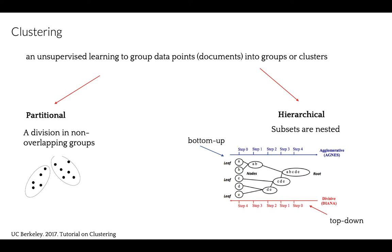It works in a bottom-up manner. Each object is initially considered as a single element cluster, or leaf, and at each step of the algorithm, two clusters that are most similar to each other are combined into a new bigger cluster, which is a node.